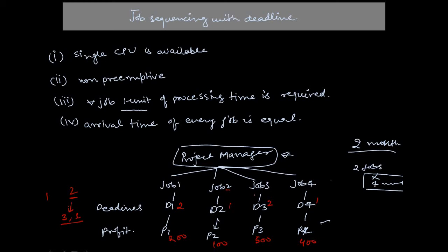Between Job 2 and Job 4, Job 4 gives the maximum profit of $400, so we select Job 4 for the first month. For the second month, we choose between Job 1 and Job 3; Job 3 has the higher profit of $500, so we select Job 3. The total profit is $900. Job 3's deadline is two months but we complete it in one month, so the deadline is met.